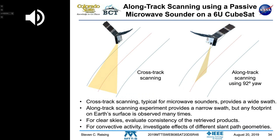Another capability of our flexible satellite is to switch from cross-track scanning to along-track scanning. To our knowledge, this has not been done before with a passive microwave or millimeter wave sounder. Cross-track gives a wide swath, while along-track gives a narrow swath.